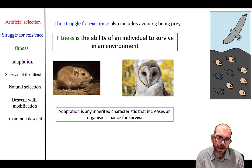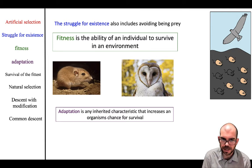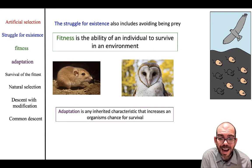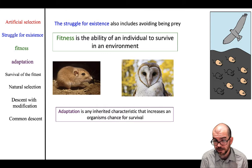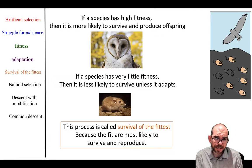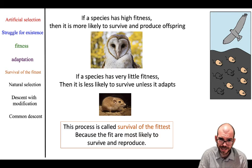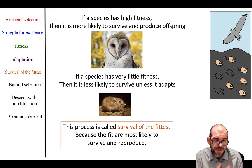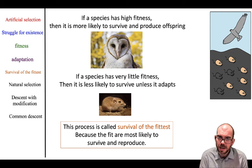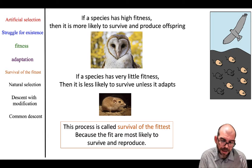When a species inherits a characteristic that helps them survive, this is what we mean by adaptation. Too often students say a species adapted in their lifetime — that is not possible. You cannot adapt in your lifetime, but you can inherit an adaptation. For example, offspring of black mice are inheriting the adaptation of black fur. If a species has high fitness, it's more likely to survive and also more likely to have offspring. This is sometimes called survival of the fittest — Darwin himself didn't use that term, but it explains that all of life is in a struggle for existence, and those with fit traits are the ones that survive.